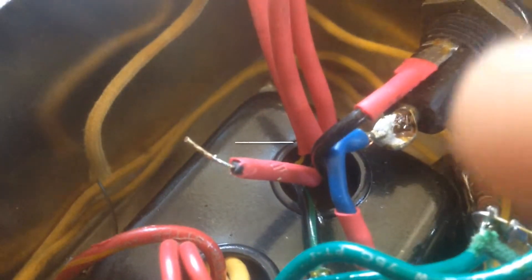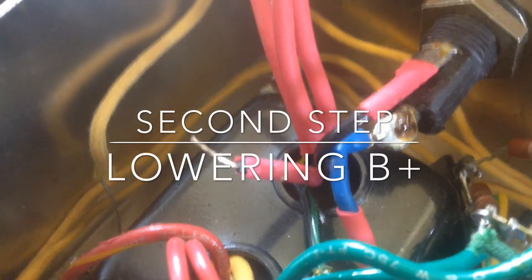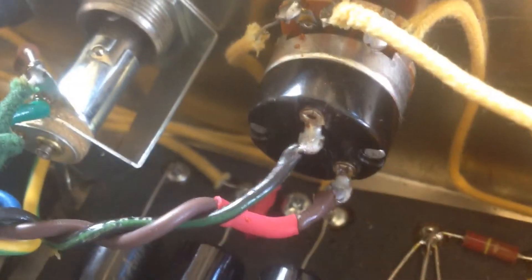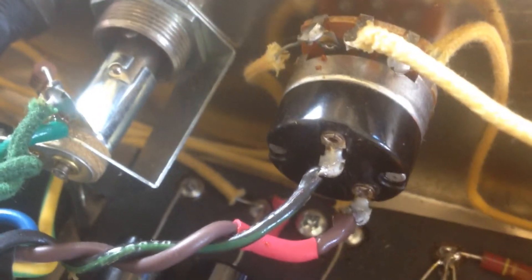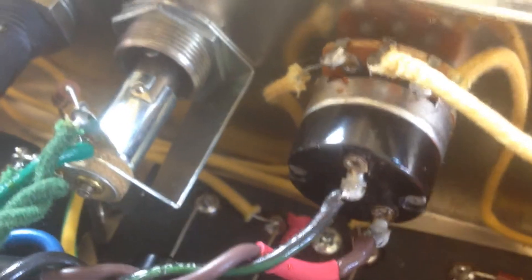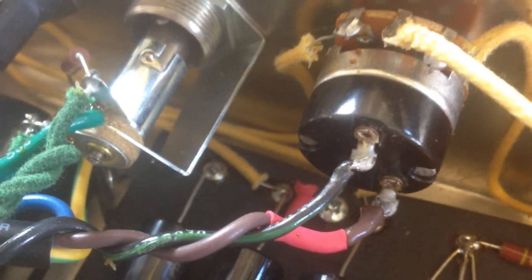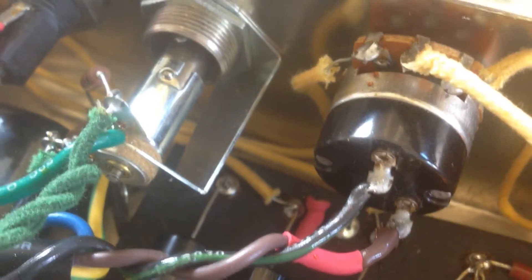I stripped the lead on the transformer for the 240 volt input. The green and black is the 230 volts primary winding of the power transformer. We're going to desolder that and connect the 240 volt winding on the power transformer.